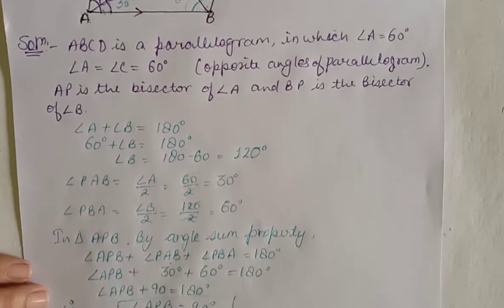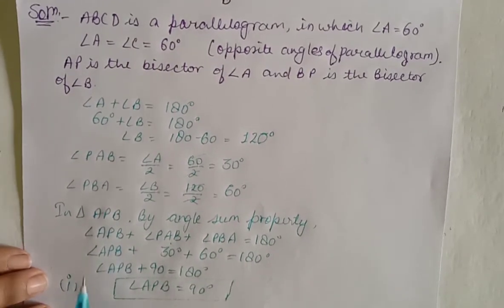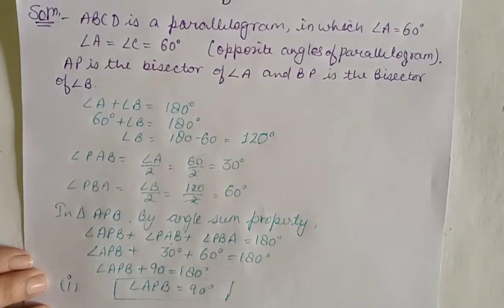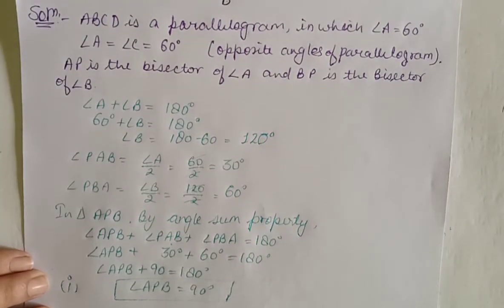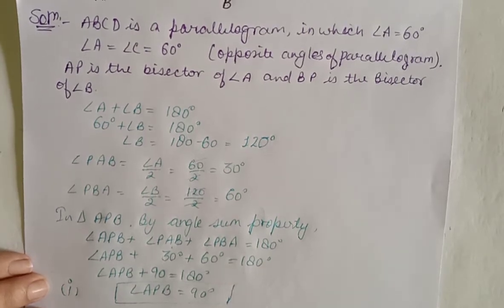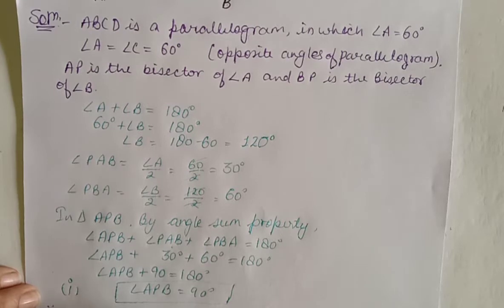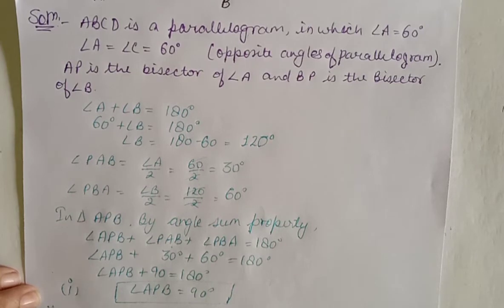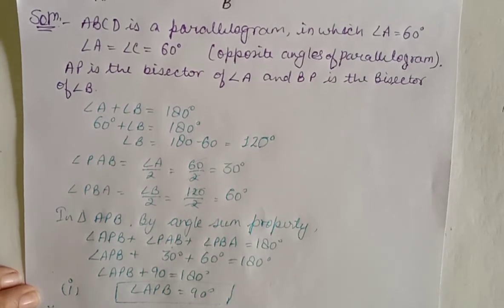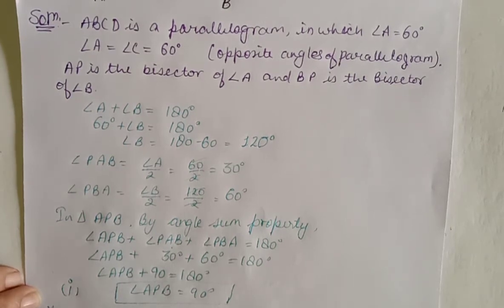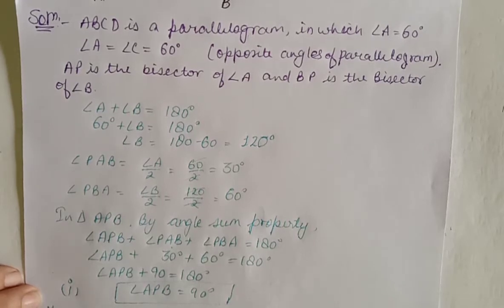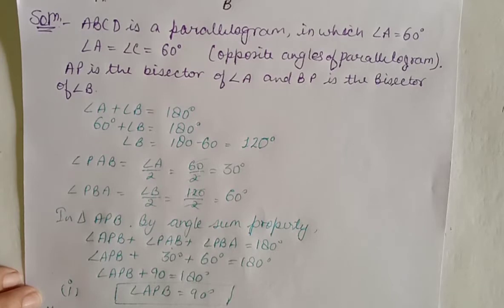Now prove AD equals DP. DC is parallel to AB, and PA is a transversal. Therefore, angle DPA equals angle PAB, which is 30 degrees — alternate interior angles.